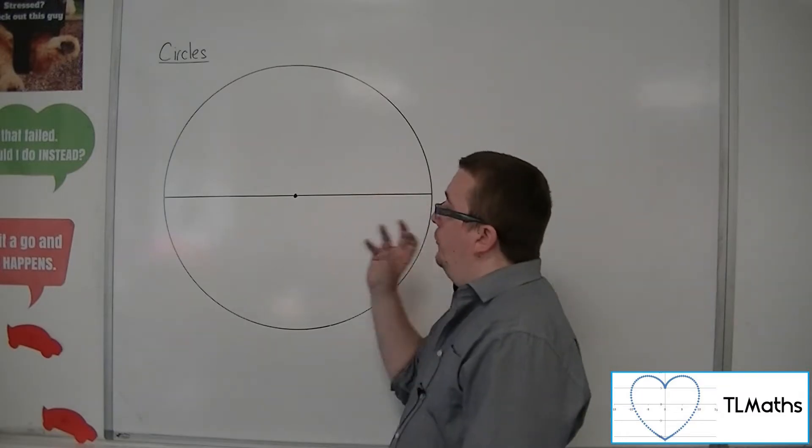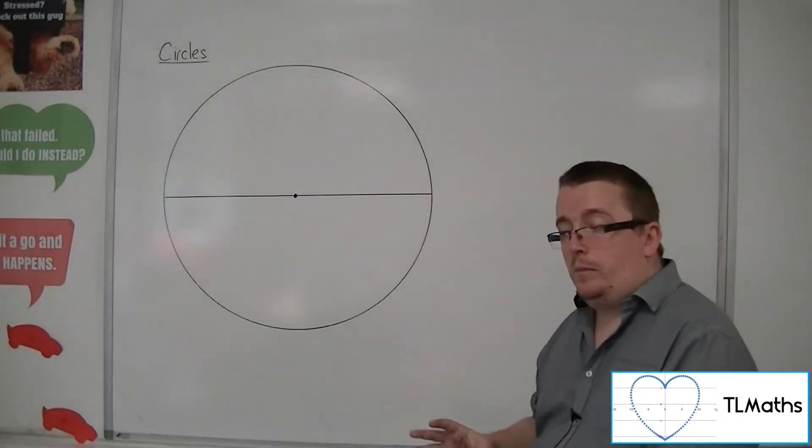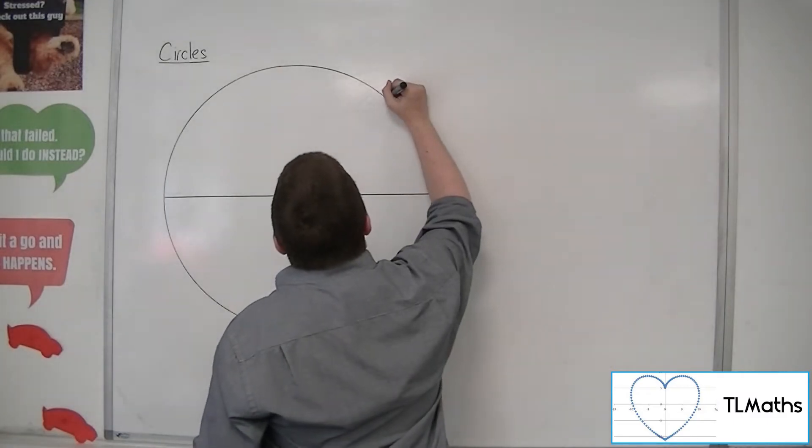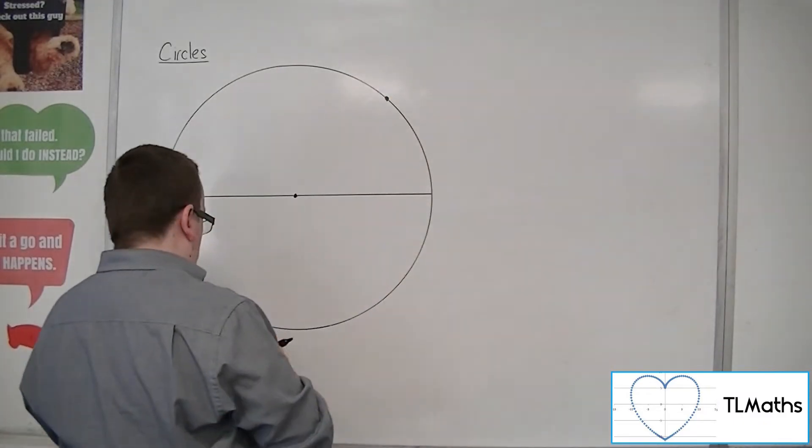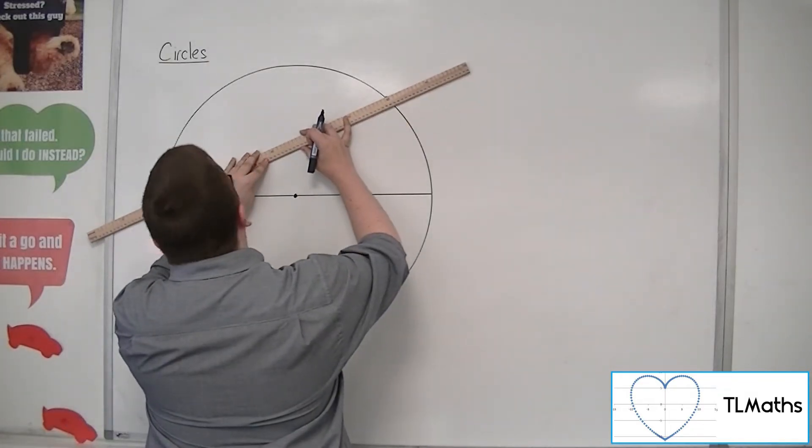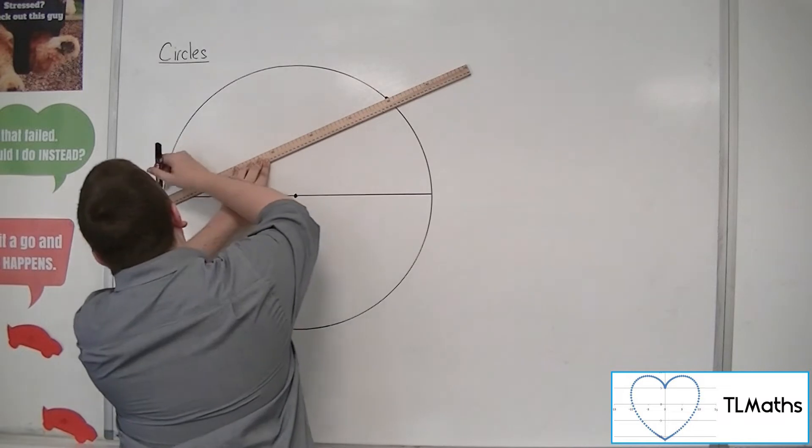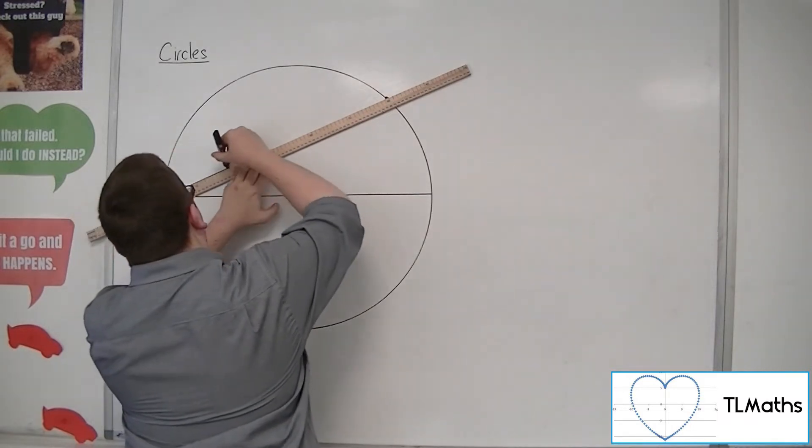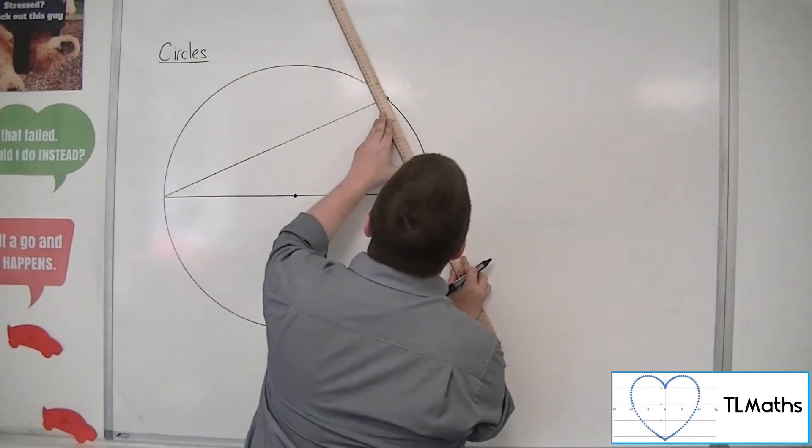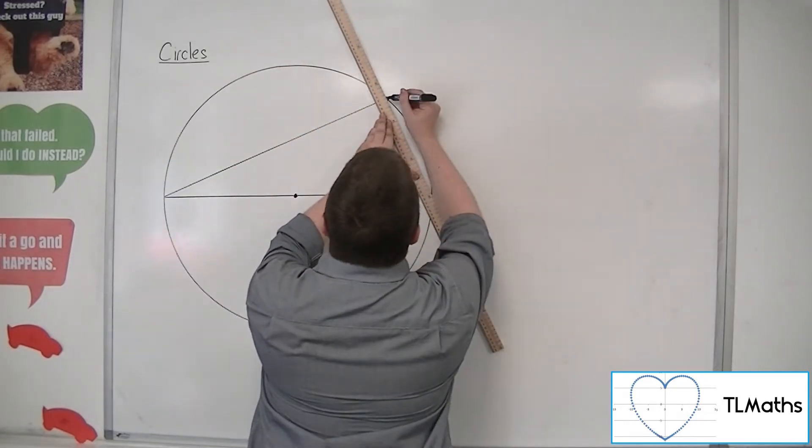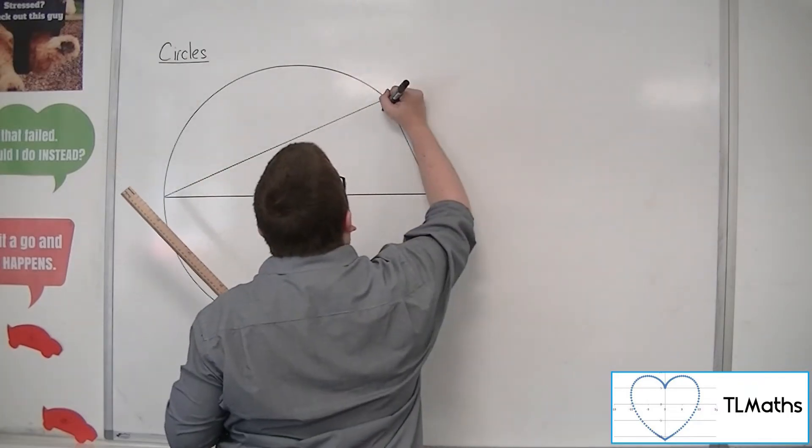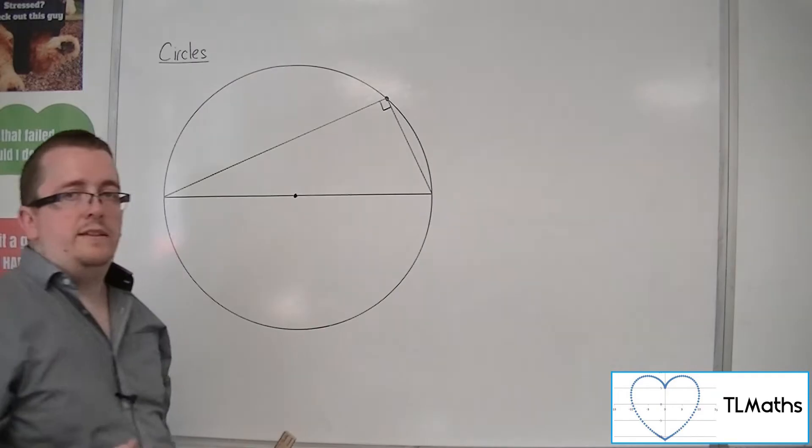So the fact that I've got a circle here, I've drawn a diameter. Now if I choose any point that is on that circle that isn't one of the end points, then if I draw from one end point to that point and then the same with the second end point, then what I will find is that that angle is always 90 degrees.